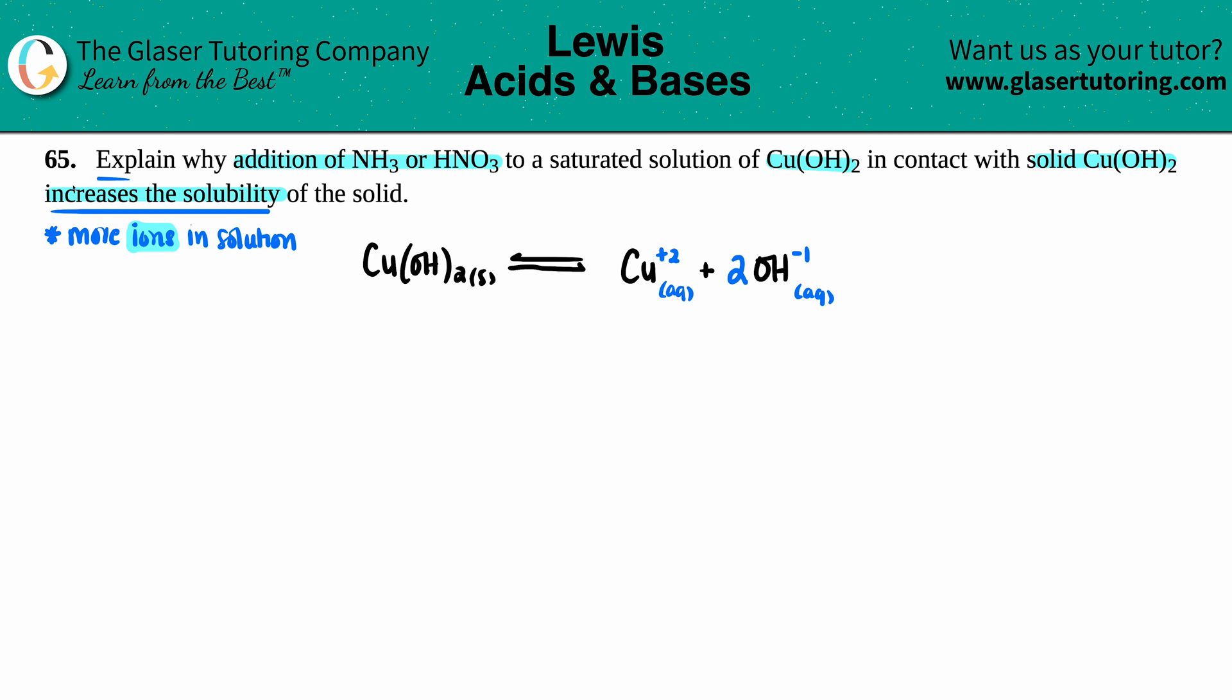Now, if we're producing more ions in solution, that means in terms of these two reactions, whether we're going in the forward direction or in the reverse direction, the forward direction is more favorable because we're increasing the solubility. We're producing more of the ions. The ions are on the product side, so we're going to the right.